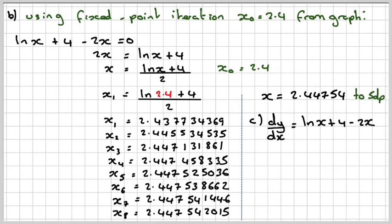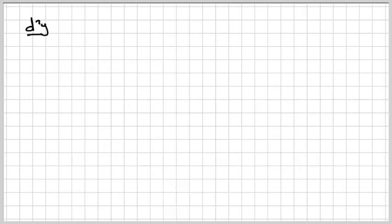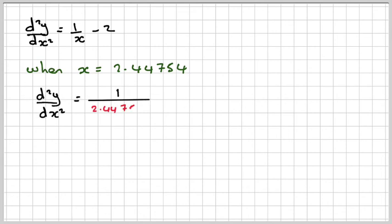Therefore, if we want to find whether that is a maximum point, we take the derivative and find the second derivative. So it's going to be 1 over x, nothing from the 4, minus 2. And then put that last value in, when x equals 2.44754. It's very easy to see that it's negative. Therefore, by the second derivative test, that will be a local maximum.